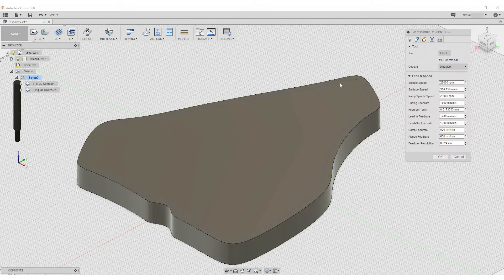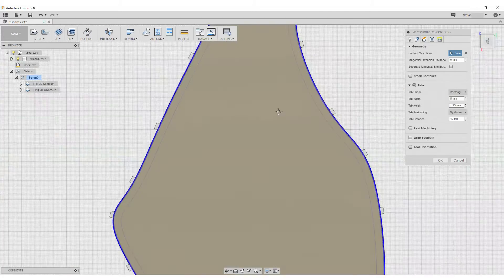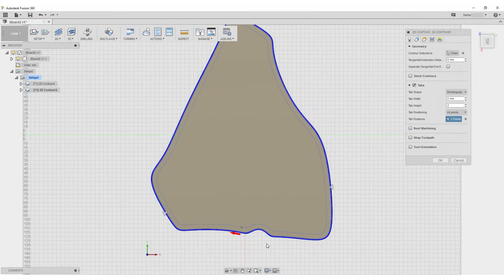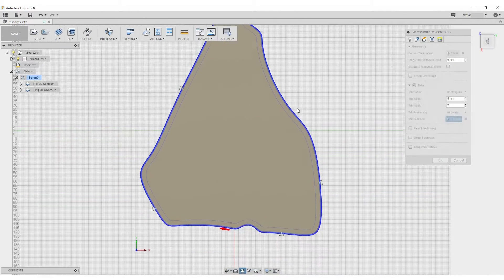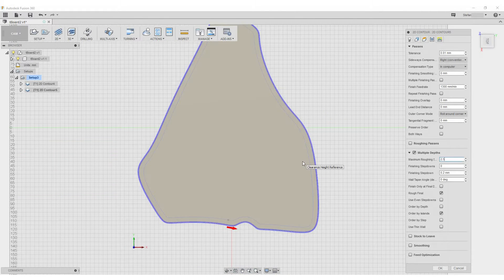In the next operation the board itself will be routed. I'll be using a 5mm end mill for this operation which has long enough flutes for the thickness of the board. I'm adding tabs at the base of the board so that it doesn't rattle loose during the finishing cut.